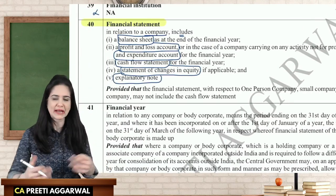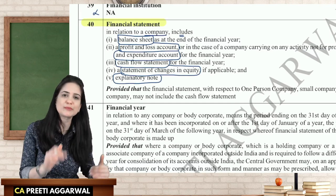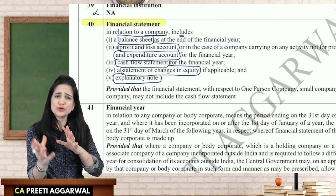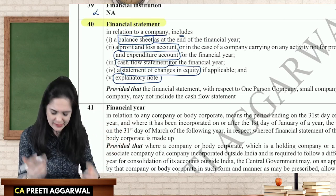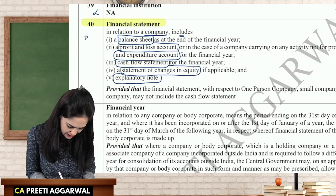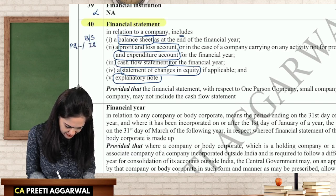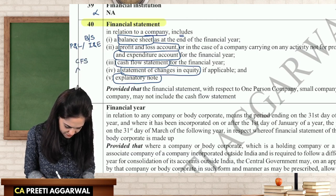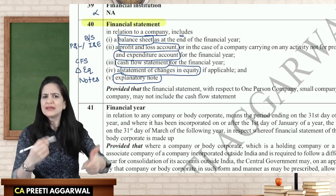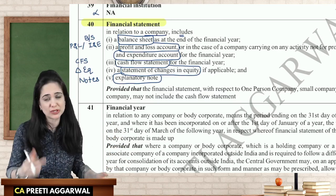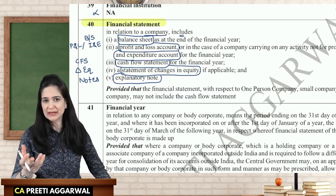A study tip: when studying definitions, use the left margin to write keywords — balance sheet, profit and loss account or income and expenditure account, cash flow statement, statement of changes in equity, and notes. This makes it very easy to revise any concept quickly because all keywords are visible at a glance.